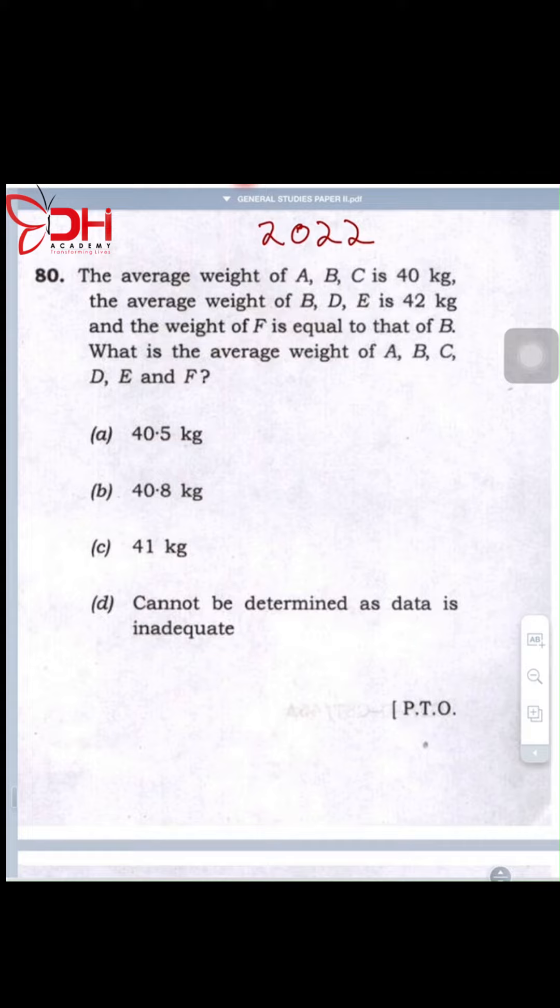The average weight of A, B, and C is 40 kilos. The average weight of B, D, E is 42 kilos. The weight of F is equal to B. Find the average of A, B, C, D, E, and F.